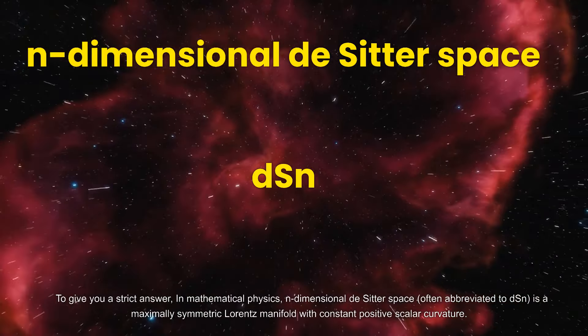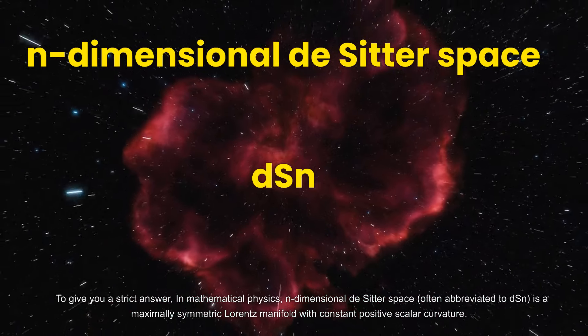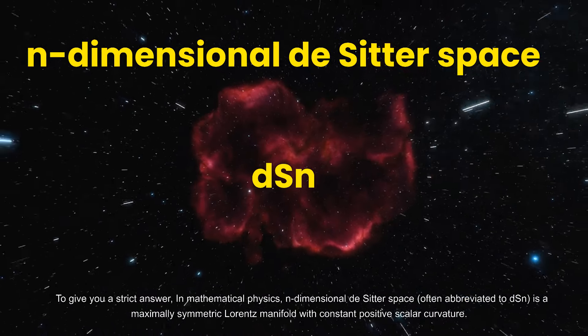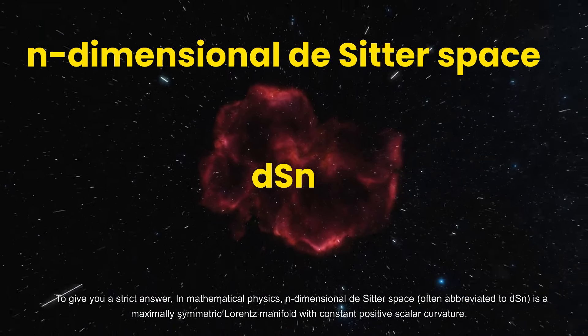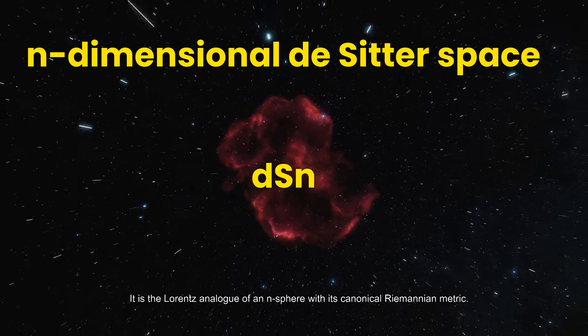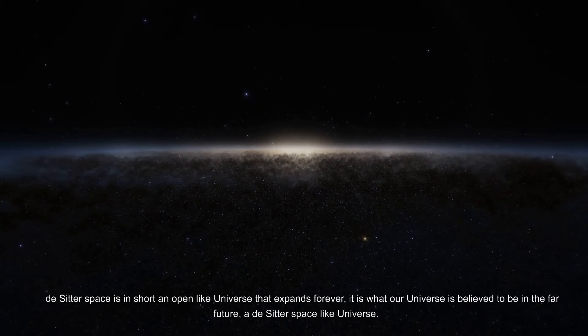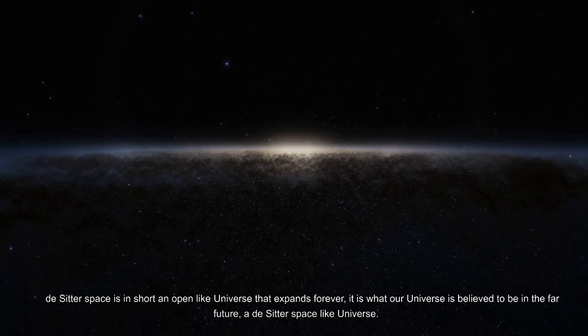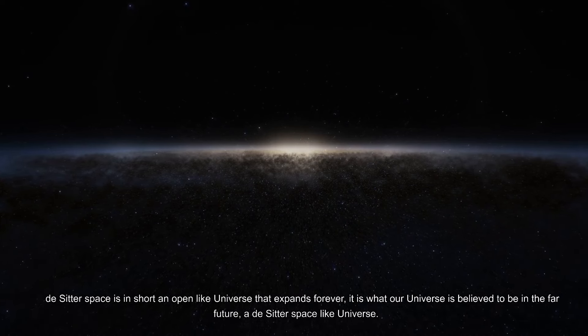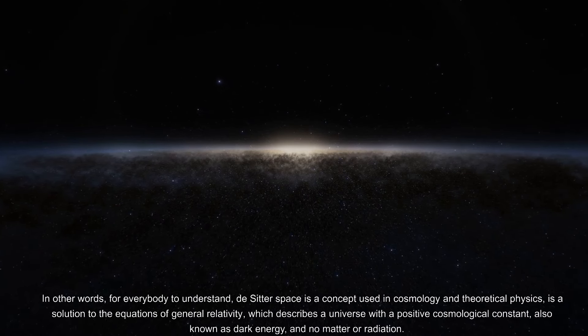To give you a strict answer, in mathematical physics, n-dimensional de Sitter space—often abbreviated to dSn—is a maximally symmetric Lorentzian manifold with constant positive scalar curvature. It is the Lorentzian analog of an n-sphere with its canonical Riemannian metric. De Sitter space is, in short, an open-like universe that expands forever. It is what our universe is believed to be in the far future—a de Sitter space-like universe.